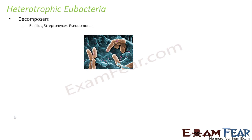So that was autotrophic bacteria. Now let us look at some heterotrophic eubacteria. Heterotrophic bacteria can be saprophytes or parasites. Let us look at the decomposers and see how heterotrophic eubacteria can also help us, because whenever we think of bacteria, we feel that they can only harm us and be of no good use.